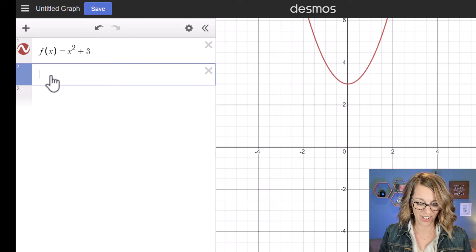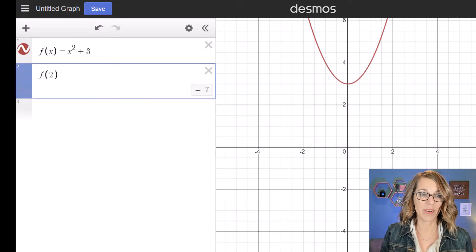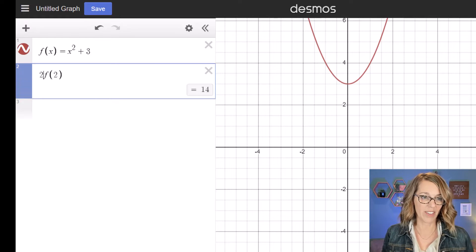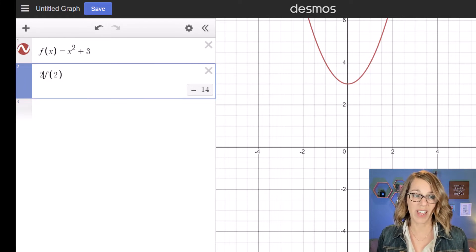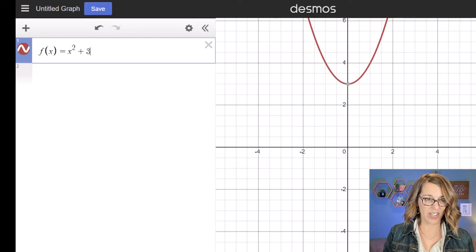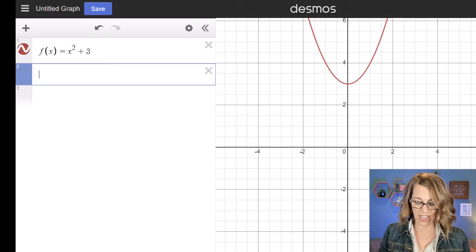Let me click in another cell. I can put in f of 2. I can even do twice that function, so 2 times f of 2, or I can define another function. Let me click on an empty cell again.